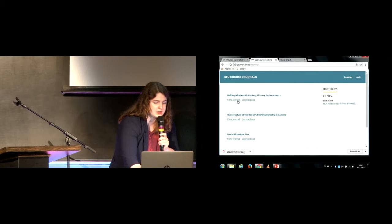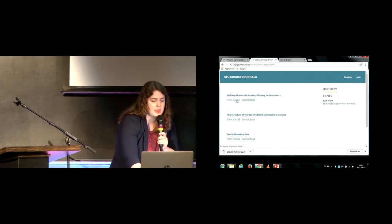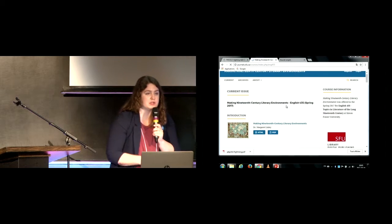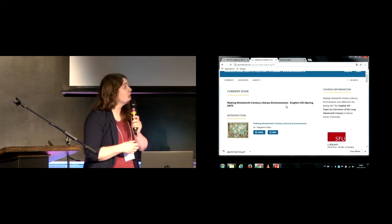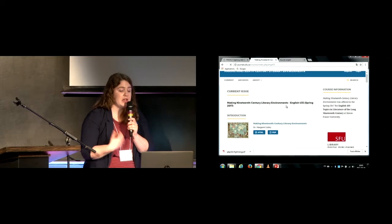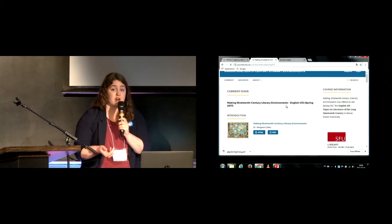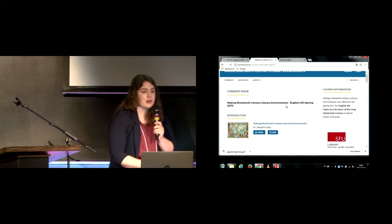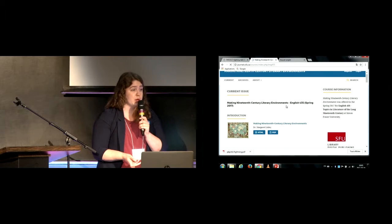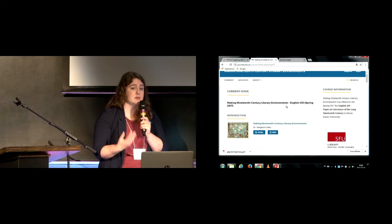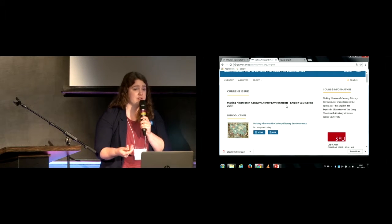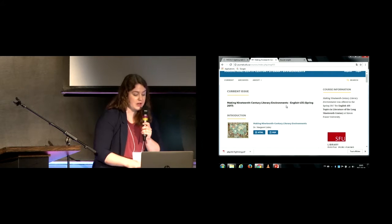The one that we worked on this fall is called 'Making 19th Century Literary Environments.' We're using OJS to create HTML and PDF copies of students' papers, and they're able to participate in the peer review process. They submit articles, students do blind peer review of each other's work, and they post it online.